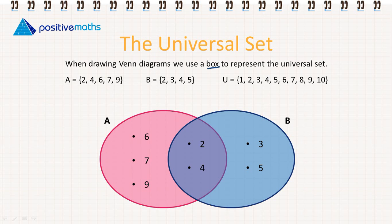We'll notice that there are some elements that are in the universal set that are not on the diagram. They are not included in A or B.